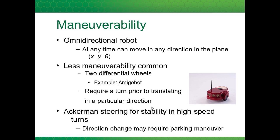Maneuverability is another of the three characteristics. The omnidirectional robot, like the U-Bot, can at any time move in any direction in the plane — translate left or right, or spin around the vertical axis. It's common to have less maneuverability than this. For example, using two differential wheels, like the AmigBot, which is a differential drive robot with two fixed driven standard wheels and one caster wheel. This has less mobility because if you want to translate in a direction that's not straight ahead — for example, in the direction of the wheel axes — this robot would require a turn prior to translation.